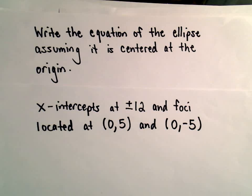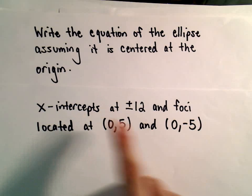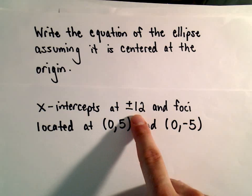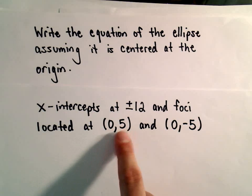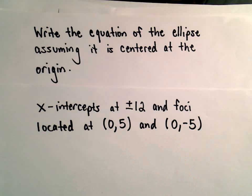Alright, so another example here where we're going to find the equation of an ellipse assuming it's centered at the origin. In this case the ellipse will have x-intercepts at positive and negative 12, and the foci will be located at (0,5) and (0,-5).